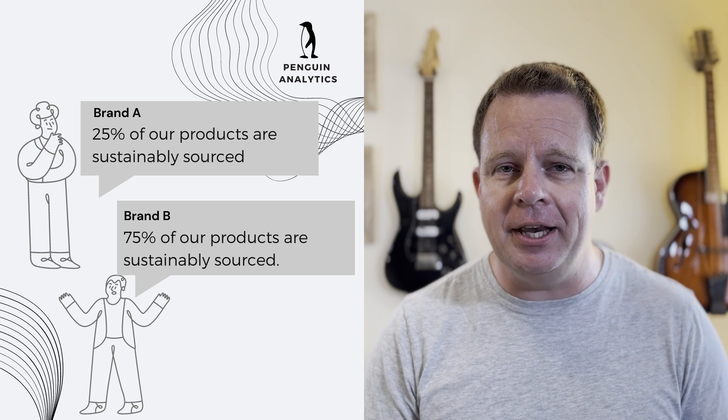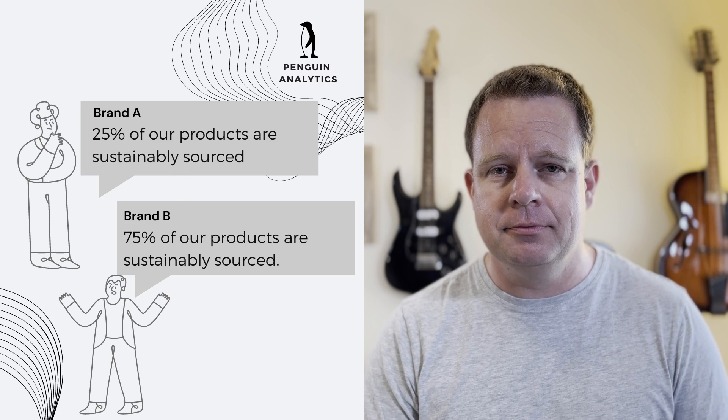Which company is the most sustainable? The answer is that we don't really know. Company A has 25% of their products sourced sustainably, but what if those 25% of their products only make up a tiny fraction of their revenue? Company B says 75% of their products are sustainably sourced, but those 75% of products could also make up only a tiny fraction of their revenue.